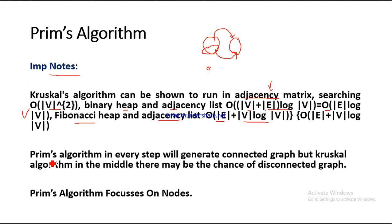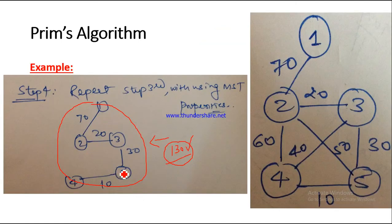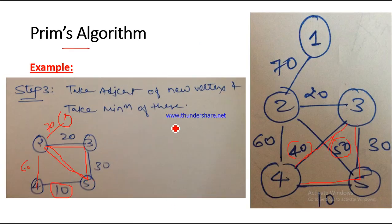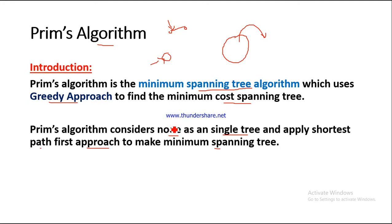An important point: Prim's algorithm in every step will generate a connected graph. When solving with Kruskal's algorithm, we may get a disconnected graph meanwhile, but after completing the MST we get a connected graph. Prim's algorithm basically focuses on nodes. I hope you have understood all the steps of the algorithm and the important points discussed. If you want to learn any important topic, comment below. Thank you so much, guys — have a nice day!